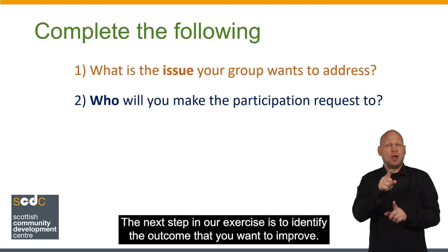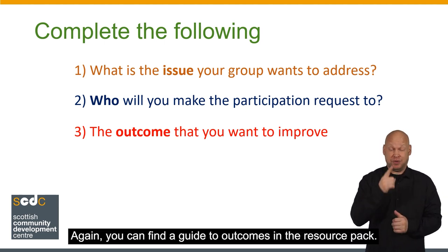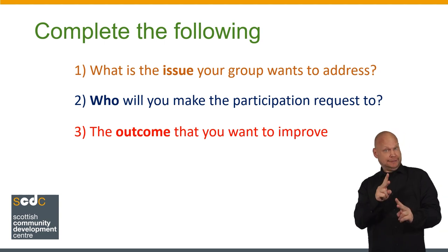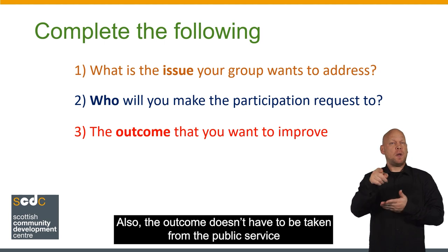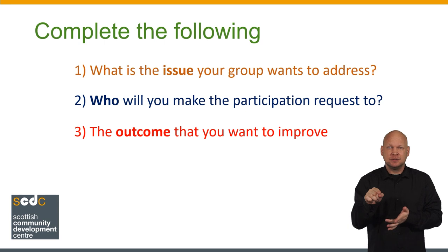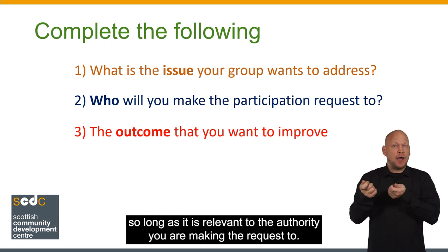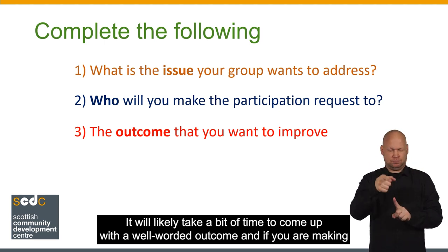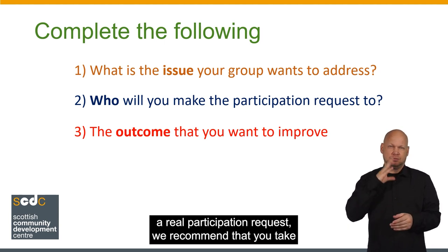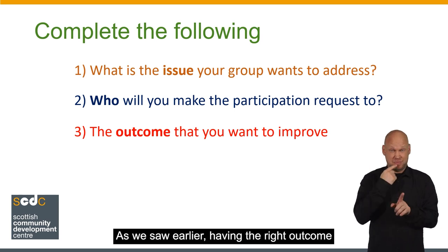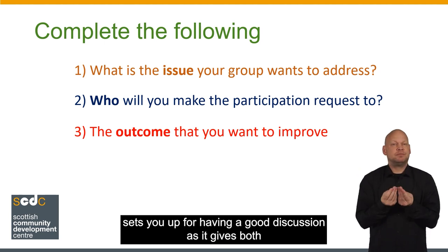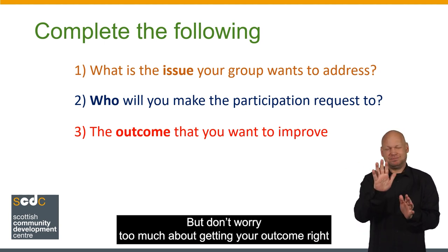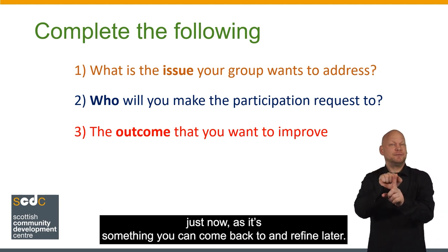The next step in our exercise is to identify the outcome that you want to improve. You can find a guide to outcomes in the resource pack. The key point is that an outcome is the change you want to see. Also, the outcome doesn't have to be taken from the public service authority's publications or website or anywhere else — it can be something you've come up with yourself, so long as it's relevant to the authority you're making the request to. It will likely take a bit of time to come up with a well-worded outcome, and if you are making a real participation request, we recommend that you take as long as you need to get it right. As we saw earlier, having the right outcome sets you up for having a good discussion, as it gives both you and the public service authority a goal to aim for that you both agree on. But don't worry too much about getting your outcome right just now, as it's something you can come back to and refine later.